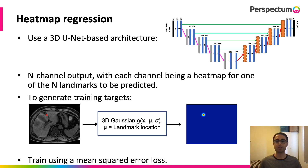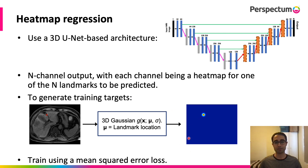Here's a quick overview of heatmap regression. For landmark localization, a U-Net based architecture is typically used, and the 3D U-Net we used is shown here. Instead of getting the network to predict softmax values for segmentation, you get it to predict heatmaps, and the hope is that the peak in the heatmap corresponds to the location of the landmark. With eight landmarks to predict, the output has eight channels, each containing one heatmap per landmark. To generate these heatmaps for training, you feed the landmark location into a 3D Gaussian, and then train the network using a mean squared error loss.